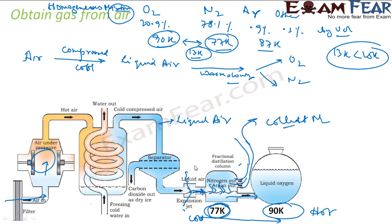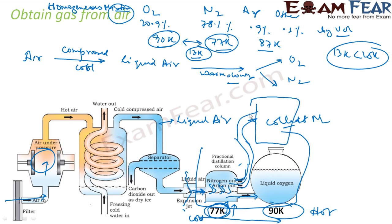The main point to note is the temperature difference. We maintain 77 K here. If we let the temperature go to 90 K, oxygen would also evaporate and be collected in the nitrogen tank, which we don't want. So we maintain exactly 77 K so that only nitrogen evaporates and is collected. The remaining liquid air, which is richer in oxygen, is passed on and collected as liquid oxygen.